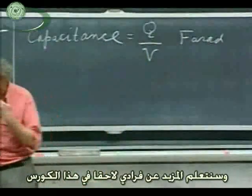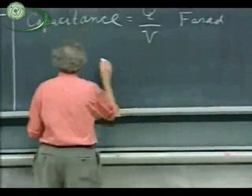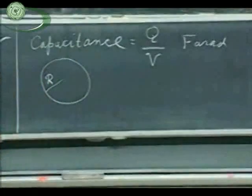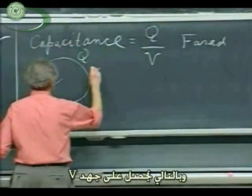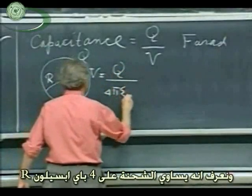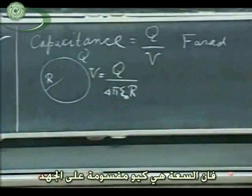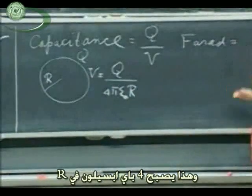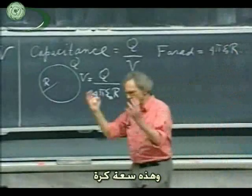We will learn more about Faraday later in this course. So let us go to a sphere which has a radius R and calculate what the capacitance is of this sphere. Think of it as being a conductor. We bring a certain charge Q on this conductor. It will then get a potential V, which we know is Q divided by four pi epsilon zero R. We've seen it many times. And so, by definition, the capacitance is Q divided by the potential. And therefore, this becomes four pi epsilon zero R. That is the capacitance of a single sphere.